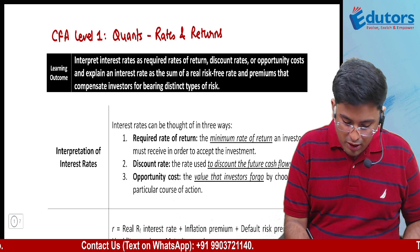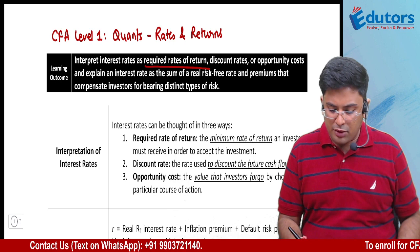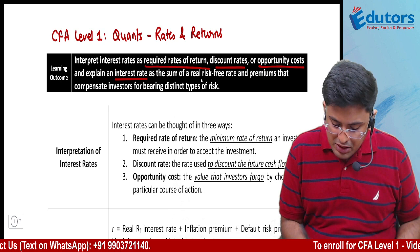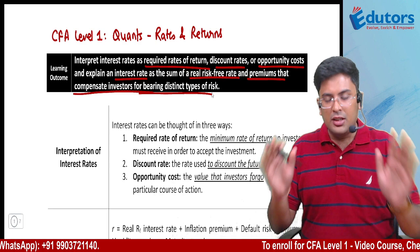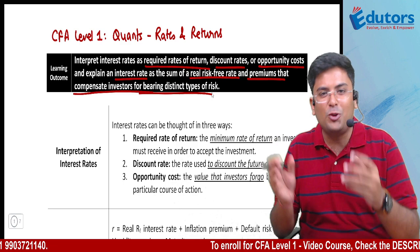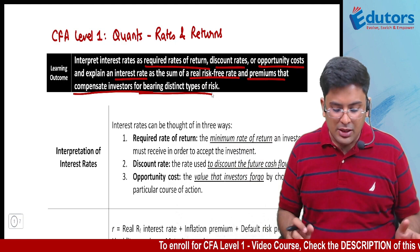The learning outcome we are starting right now is interest rates — defining or interpreting interest rates as required rates of return, discount rate, or opportunity cost. We also need to explain interest rate as a sum of real risk-free rate and premiums that compensate investors for bearing distinctive risk. This sounds like two learning outcomes mixed into one.